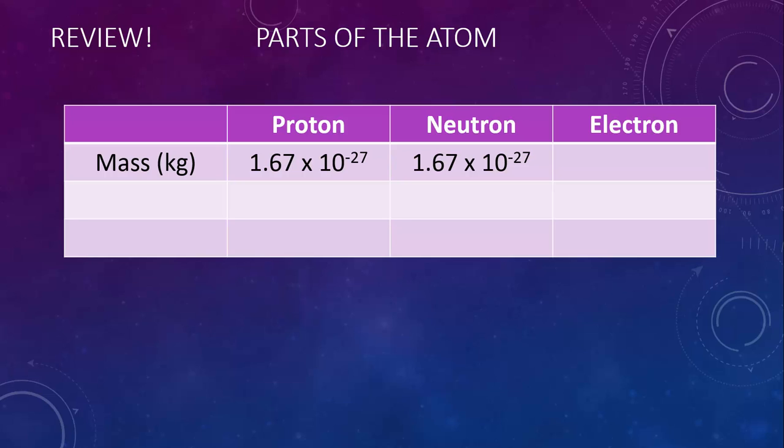The electron, as you know, is even smaller: 9.11 times 10 to the negative 31 kilograms. You can find all of these numbers on the first page of your reference tables.